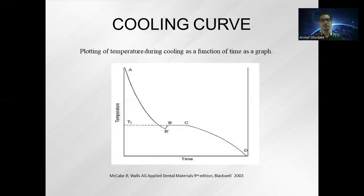The cooling curve for the solidification process is a plot of temperature during cooling as a function of time. In region A to B, there is sudden cooling, then at point B-dash, the critical temperature or critical cooling point is where solidification starts.